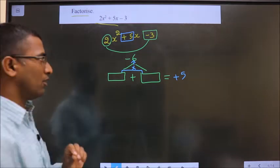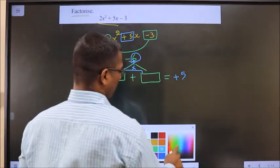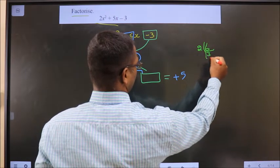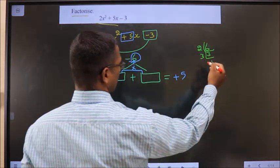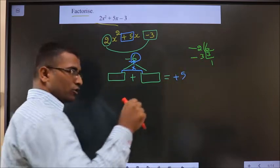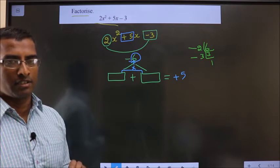How do we get those 2 numbers? By taking LCM of 6. Take LCM of 6. It will be 2, 3 and 3, 1. So, the 2 numbers are 2 and 3. 2 plus 3 is 5. 2 into 3 is 6.